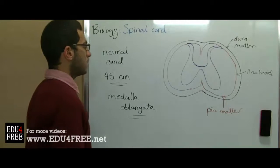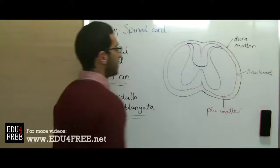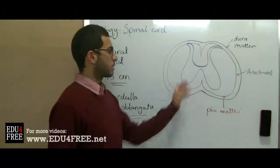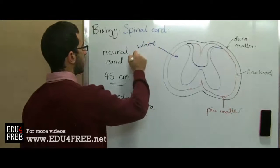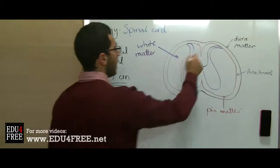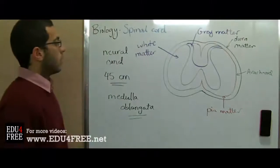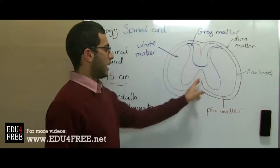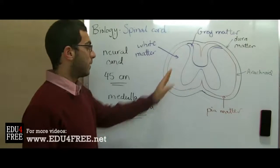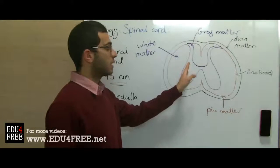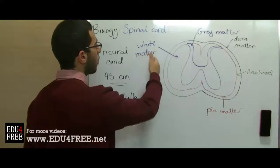The spinal cord consists of two parts: the white matter and the gray matter. The gray matter has the shape of an H, and the white matter surrounds the gray matter. The white matter contains the nerve fibers, and the gray matter contains the nerve cells. The nerve cells are found in the gray matter, and the nerve fibers extend from them to form the white matter.